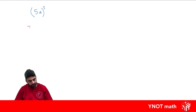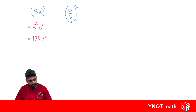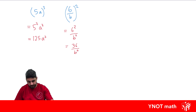Now let's use all these index laws with some examples. Let's look at (5a) all to the power of 3. We know from our index law that when we have a product to a power, we've got to raise every term inside by that power, so that's going to be 5 cubed times a cubed. And 5 cubed is 125, giving us 125a cubed. What about (6/b) all to the power of 2? Using our index law, when we have a quotient to a power, we raise the numerator and the denominator each to that power, so we get 6 squared over b squared, which is 36 over b squared.